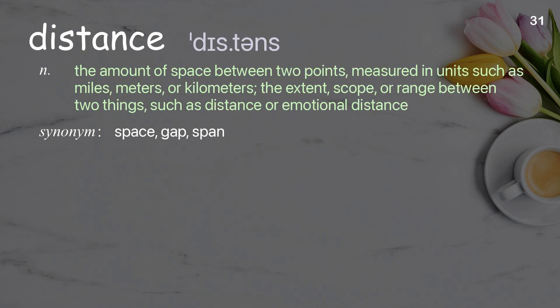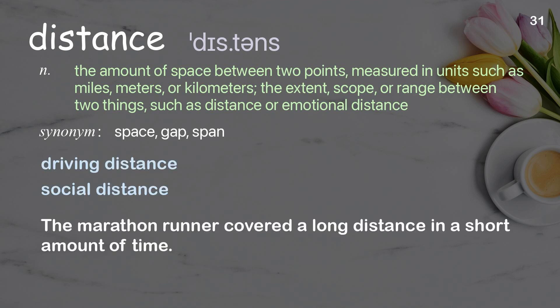Distance. The amount of space between two points, measured in units such as miles, meters, or kilometers; the extent, scope, or range between two things, such as physical or emotional distance. Examples: driving distance, social distance. The marathon runner covered a long distance in a short amount of time.